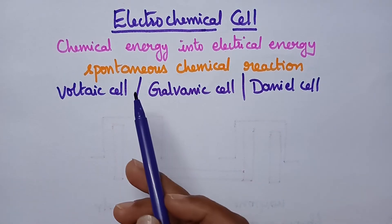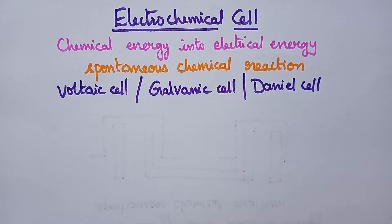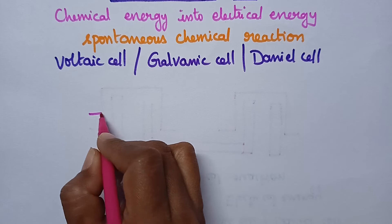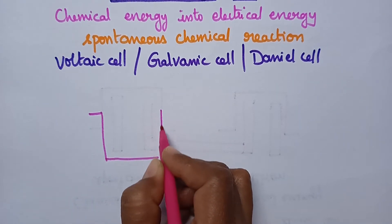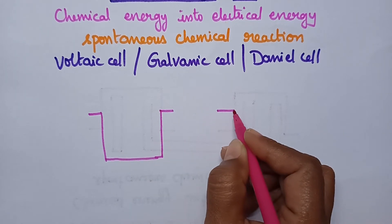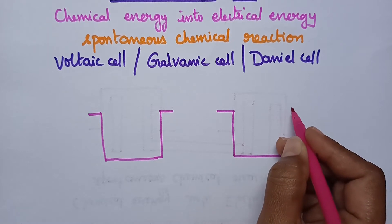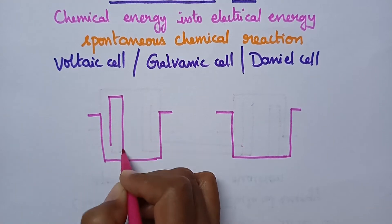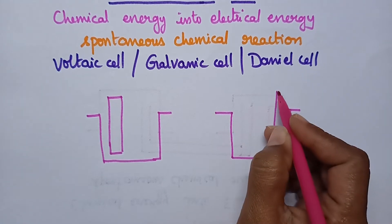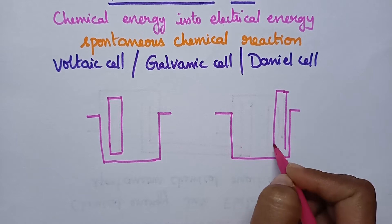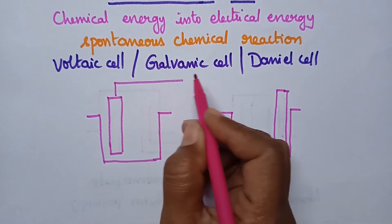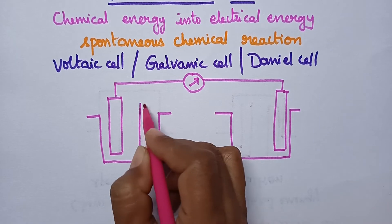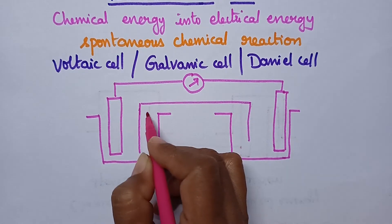In general, the electrochemical cell consists of two electrodes dipped in two electrolytic solutions. Coming to the galvanic cell, it consists of a zinc rod dipped in zinc sulfate solution and a copper rod dipped in copper sulfate solution. These two electrodes are connected through a voltmeter, and the two electrolytic solutions are connected through a salt bridge.